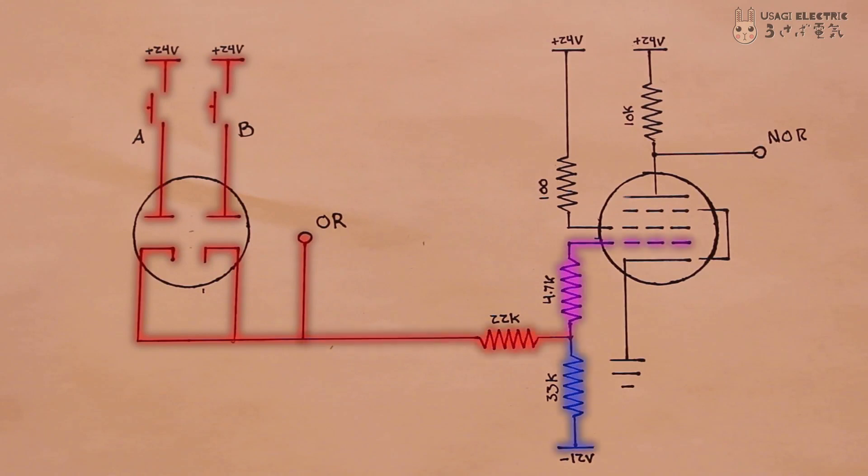The OR gate output is then fed into the grid of a 6AU6 pentode, which inverts it. The output coming off the 6AU6 is the NOR gate.